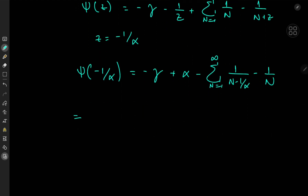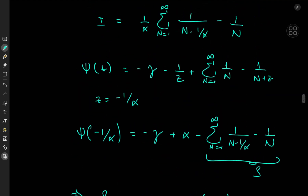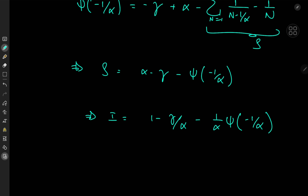So the sum S equals alpha minus the Euler-Mascheroni constant minus the digamma function evaluated at -1/alpha. Plugging this into the result for the target integral I and multiplying by 1/alpha, we get I equals (1 - gamma_EM)/alpha minus (1/alpha) times digamma(-1/alpha).